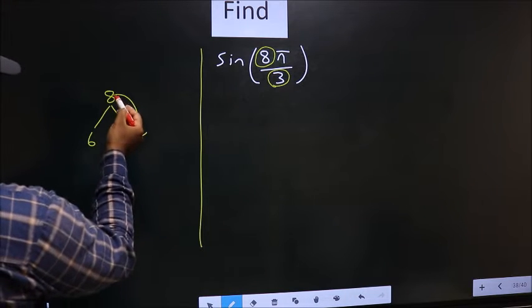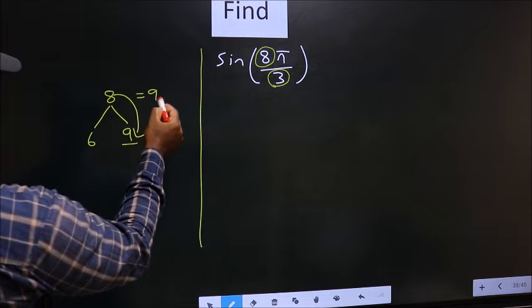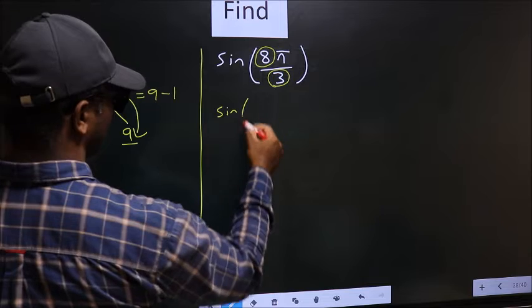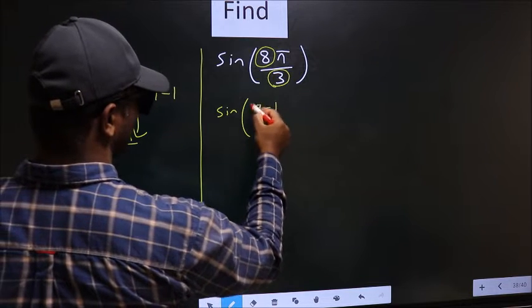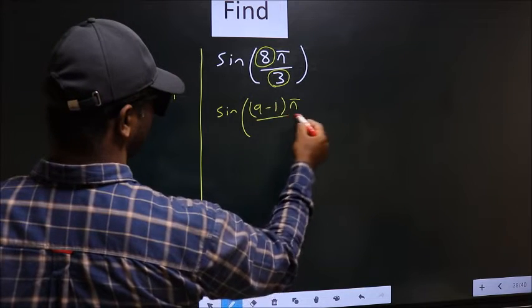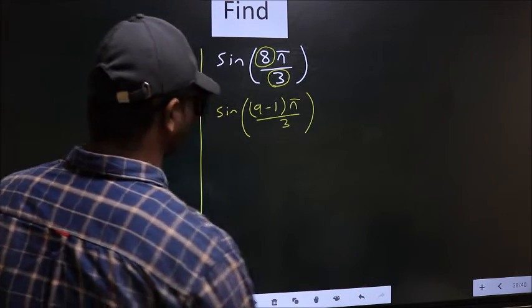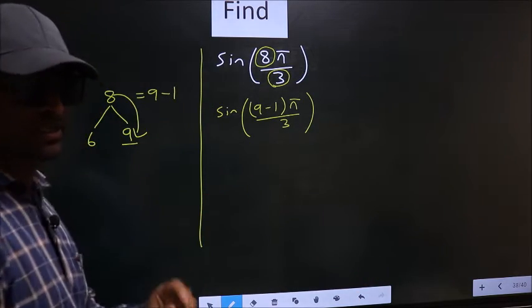So you should write 8 as 9 minus 1. So this will change to sin((9 - 1)π/3). So this is your step 1.